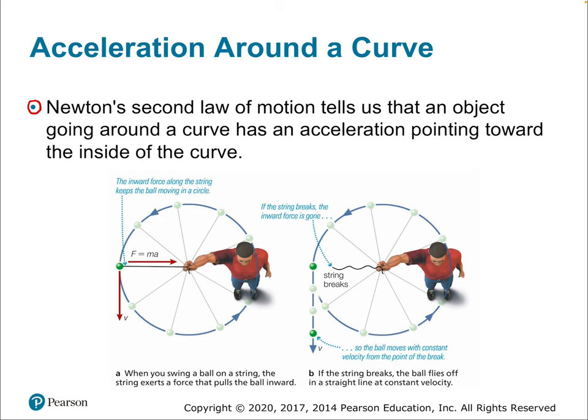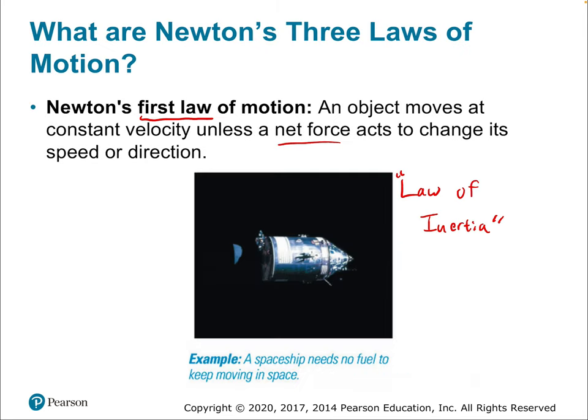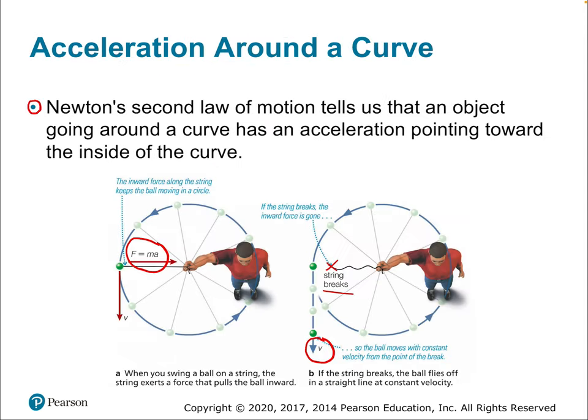A good example is spinning an object attached by a string overhead, where the force that keeps the object spinning equals mass times acceleration, according to Newton's second law. If that force is suddenly removed — say the string breaks — the object stops turning and continues at constant velocity. If this were outer space with no gravity, it would continue at that constant velocity forever, with no force acting on it and no planets nearby to tug on it. It would stay in that motion forever — not turning, not slowing down, not speeding up — because there's no net force. You can see the close relationship between the first and second law.